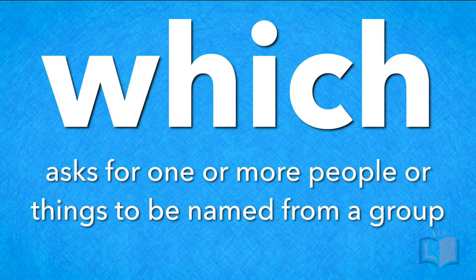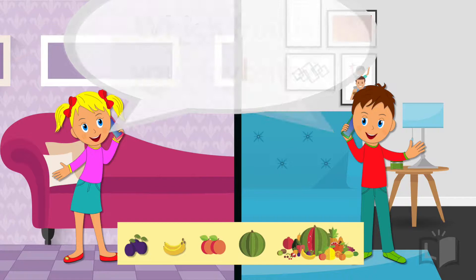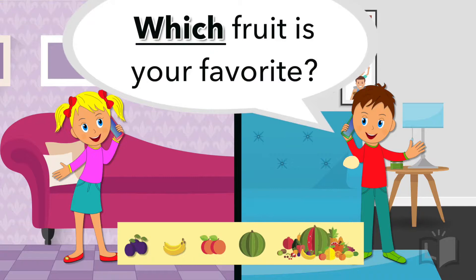Which fruit is your favorite? I would show you, but I already ate it. The boy is asking the girl to name one type of fruit from many types of fruit. The group of fruit might include berries, bananas, peaches, watermelon, or many others. The boy wants her to name only one type of fruit.